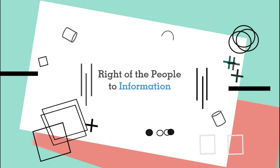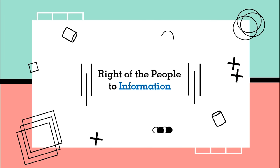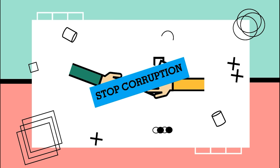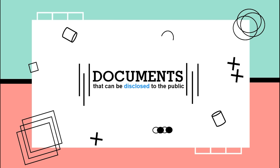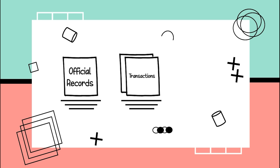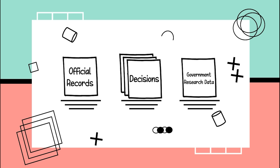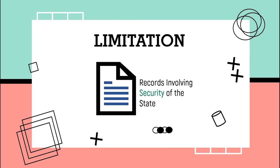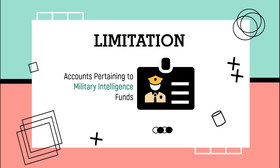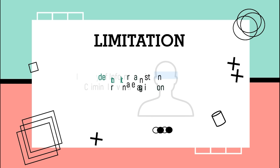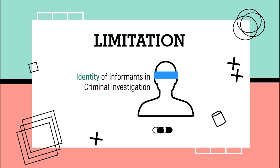Moving on to the right of the people to information. In a democratic state, citizens have the right to access the records of their government to prevent public officials from engaging in corrupt practices. The following documents can be disclosed to the public: official records; documents and papers pertaining to official acts, transactions, or decisions; and government research data used as a basis for policy development. However, some documents should not be disclosed: records involving the security of the state, accounts pertaining to military intelligence funds, trade secrets and banking transactions, identity of informants in criminal investigations, and confidential diplomatic matters.